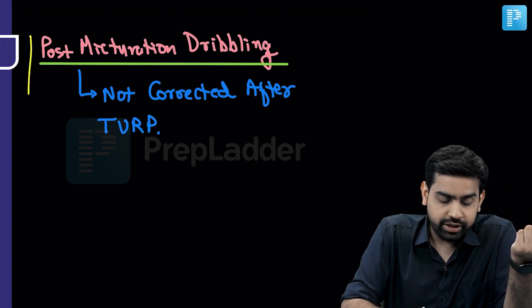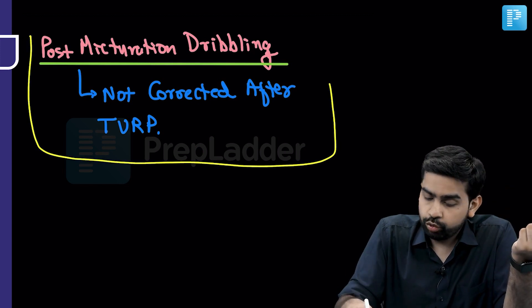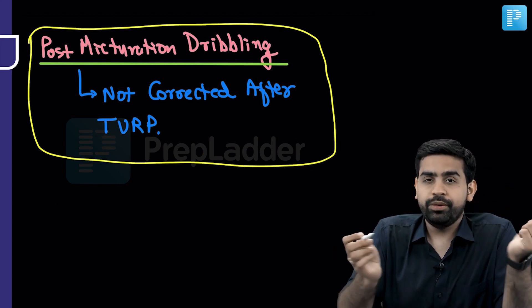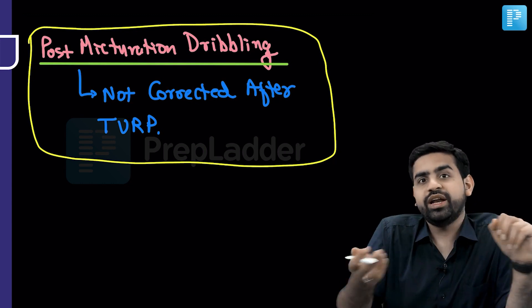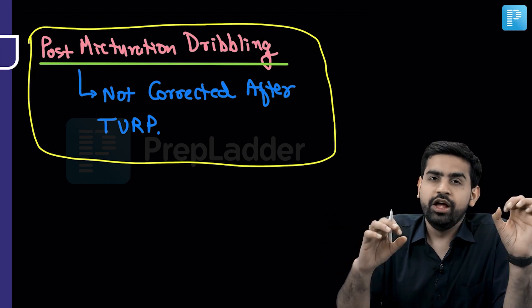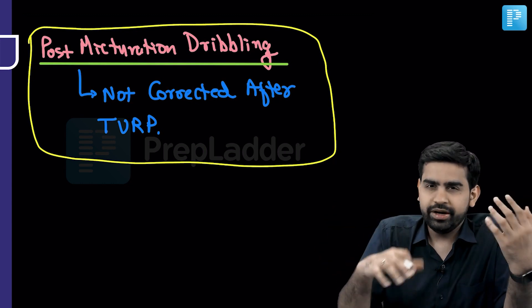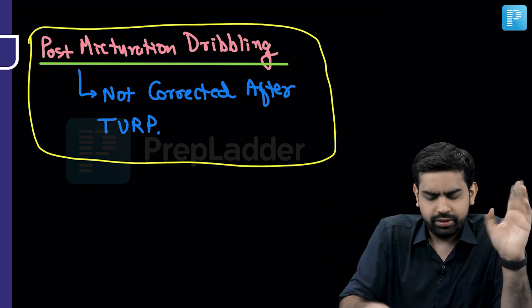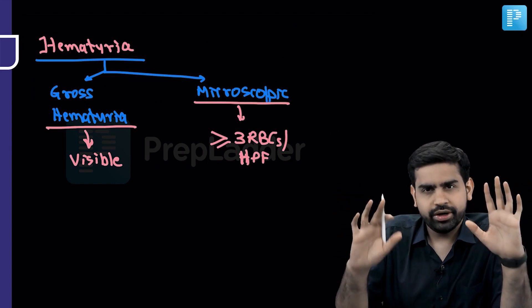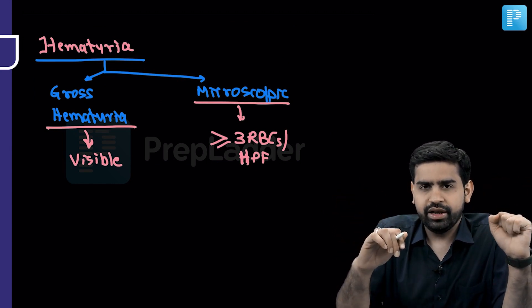One important one-liner: after doing a TURP, which symptom may not get corrected? The answer is post-void dribbling — it might continue but is not a big concern and is absolutely fine.